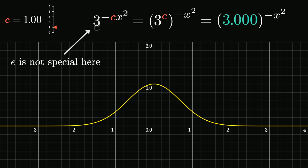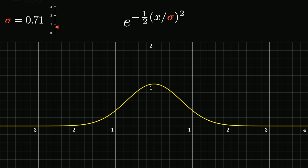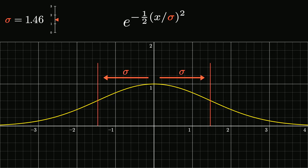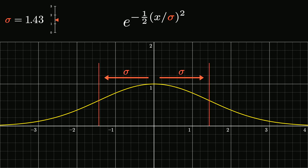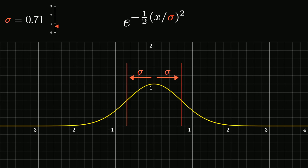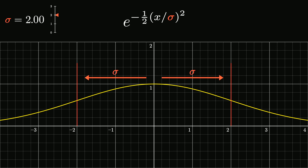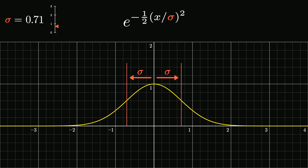The reason we use e is that it gives the constant a very readable meaning. If we reconfigure things so that the exponent looks like negative one-half times x divided by a certain constant — which we'll suggestively call sigma squared — then once we turn this into a probability distribution, that constant sigma will be the standard deviation of that distribution. And that's very nice.